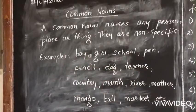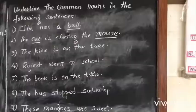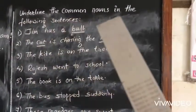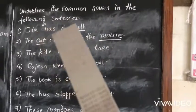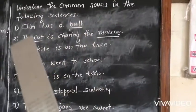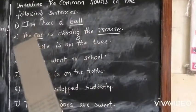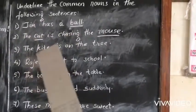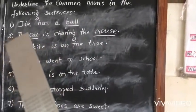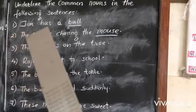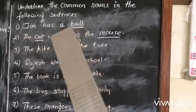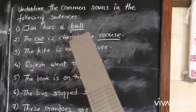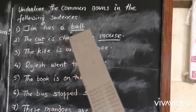Isn't it? Now, let's underline the common nouns in the following sentences. I have done two sentences for you; the remaining you can do for your homework. The first one: G has a ball. Ball is underlined because it is a common noun.